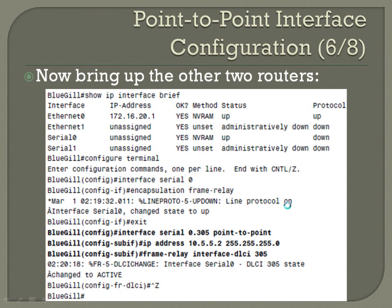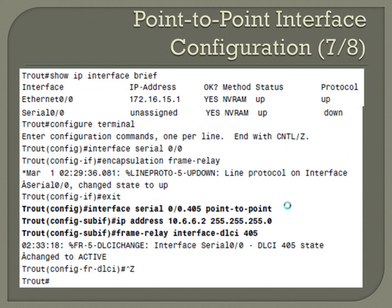On the other one, exact same kind of structure. Show IP in brief — looks like serial 0.0 needs to be modified. Config T, interface serial 0, encapsulation frame-relay. You can see the line protocol comes up.